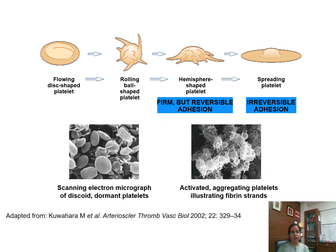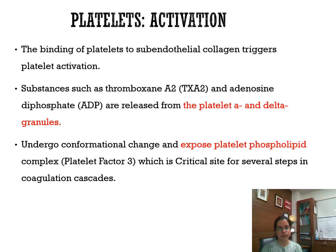Platelets are normally discoid in shape, and when activated, cytoplasmic projections develop. Electron microscopy shows discoid dormant platelets versus activated platelets with these projections. Binding of platelets to subendothelial collagen triggers platelet activation; the alpha and delta granules release their contents. Platelets undergo a conformational change and expose the platelet phospholipid complex — platelet factor 3 — which is a critical site for several steps in the coagulation cascade.